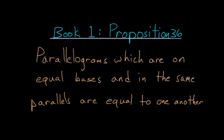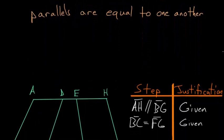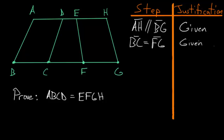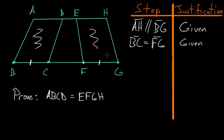For Book 1, Proposition 36 of Euclid's Elements: parallelograms which are on equal bases and in the same parallels are equal to one another. So basically, if we have two parallelograms ABCD and EFGH, and they share equal bases — base BC equals base FG — and they end on the same line AH that is parallel to BC and FG, then we can prove these two parallelograms are equal to each other.